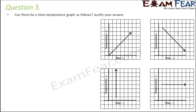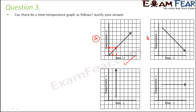Question 3: can there be a time-temperature graph as follows? Justify your answer. Looking at graph A, as time increases the temperature also increases — when time increases along the x-axis, the corresponding temperature increases along the y-axis. This is possible, so graph A is a valid time-temperature graph.